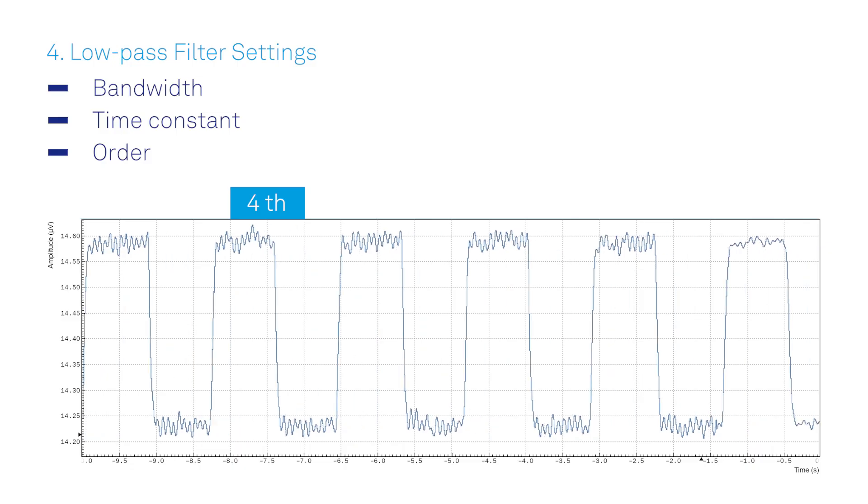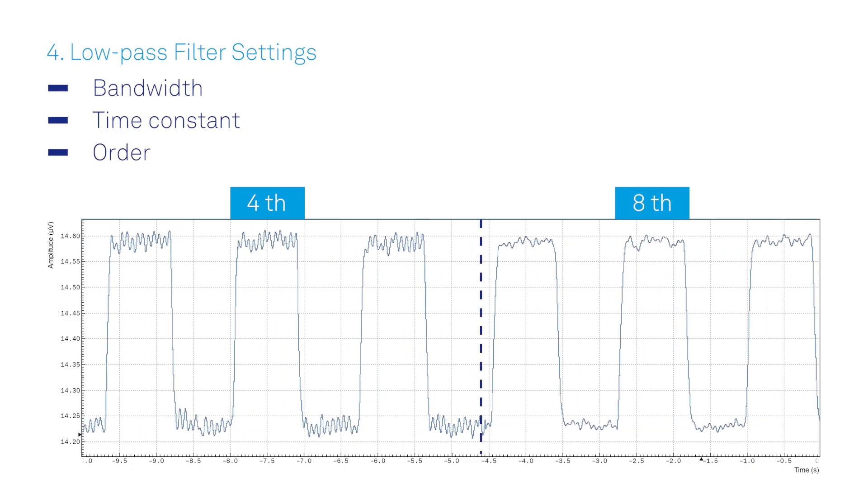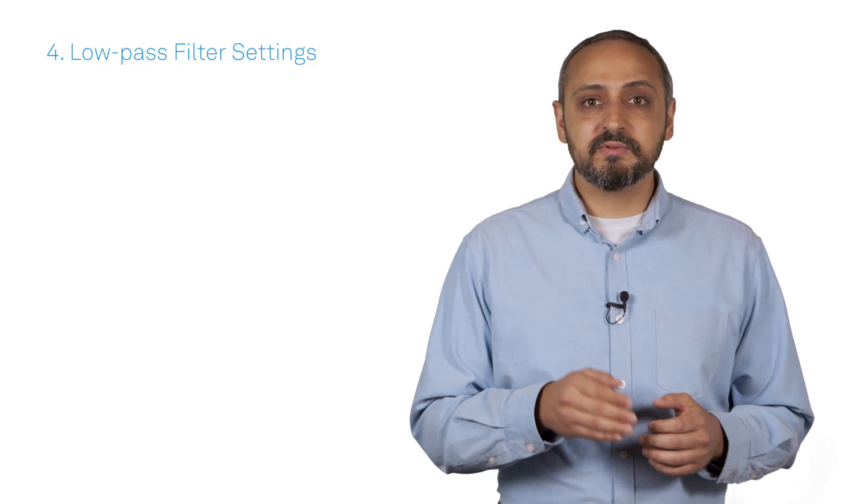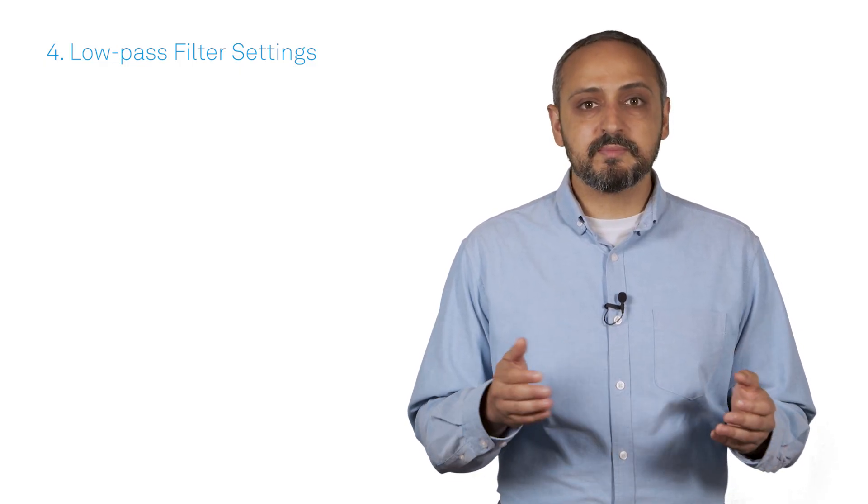If spurious noise is nearby in frequency, a high filter order with a steep filter slope helps reject it. So ensure that the instrument offers multiple filter orders and a broad filter bandwidth range for your current and future needs.